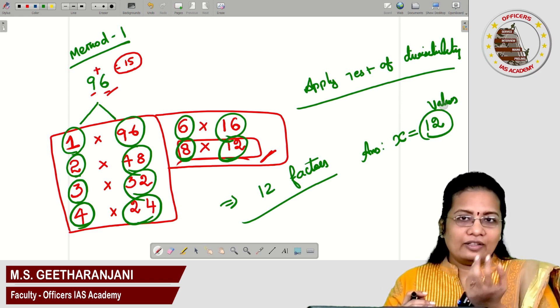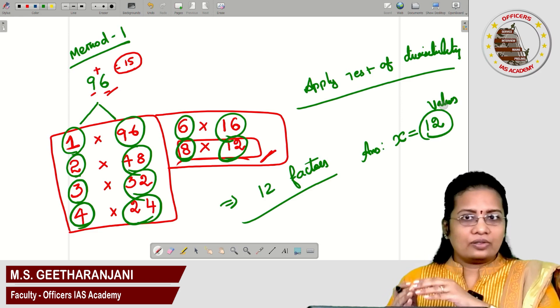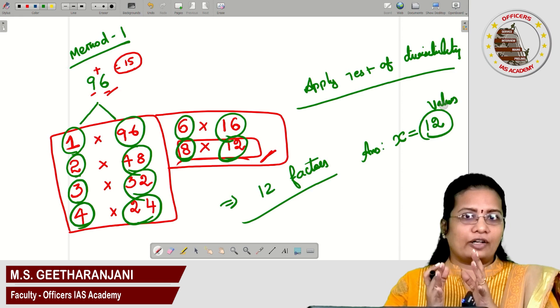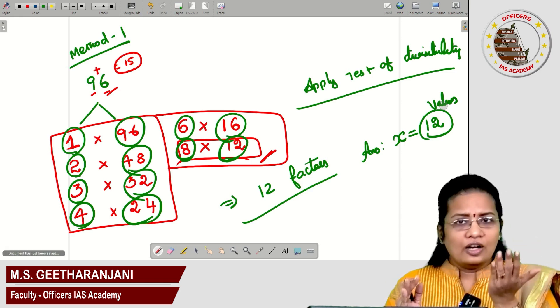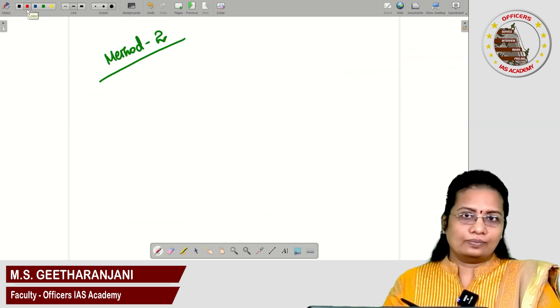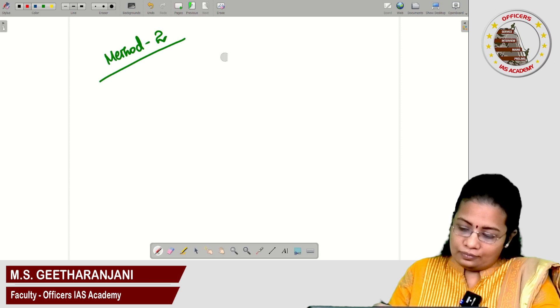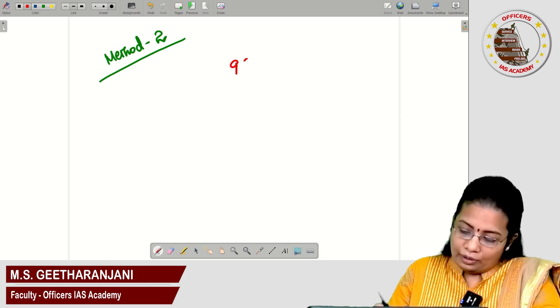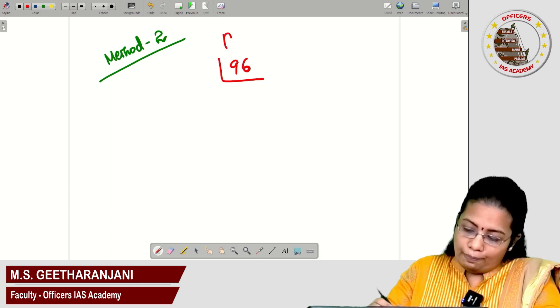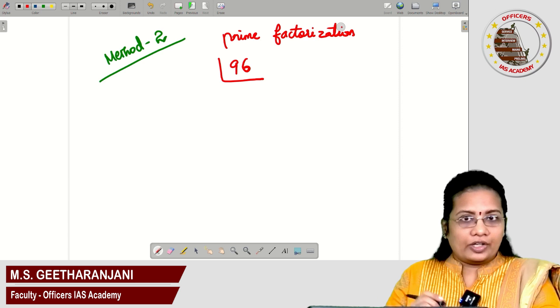Method 2 of finding the number of factors. In this case, you will not be able to get the actual factor. Just we can count the number of factors. Let's find that. Method 2. In this method 2, take the number 96. Do prime factorization.